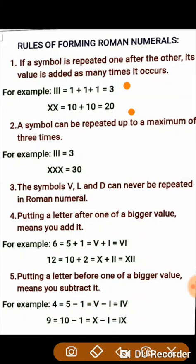The second rule says a symbol can be repeated up to a maximum of 3 times. For example, 3 is written as III, and 30 is written as XXX — that is 3 times X. There are certain symbols that cannot be repeated in the Roman numeral system. These symbols are V, L, and D.